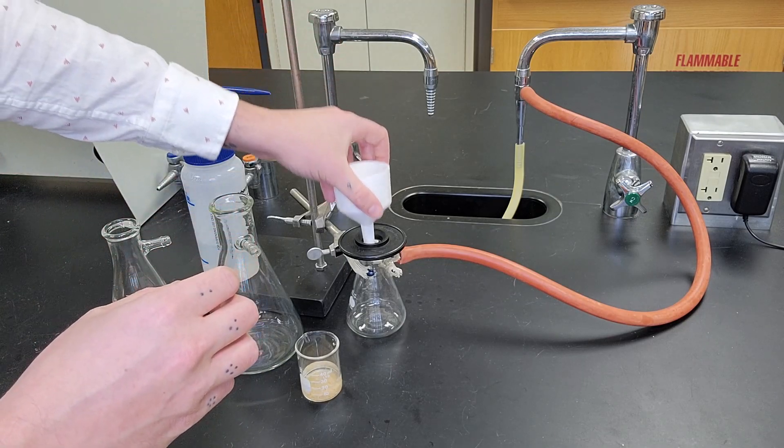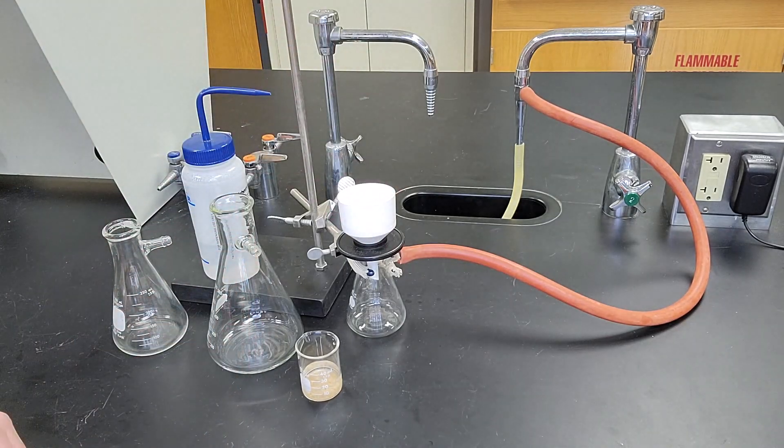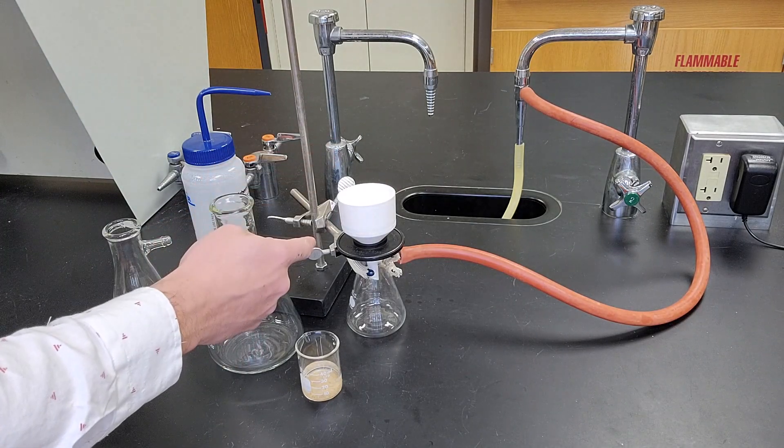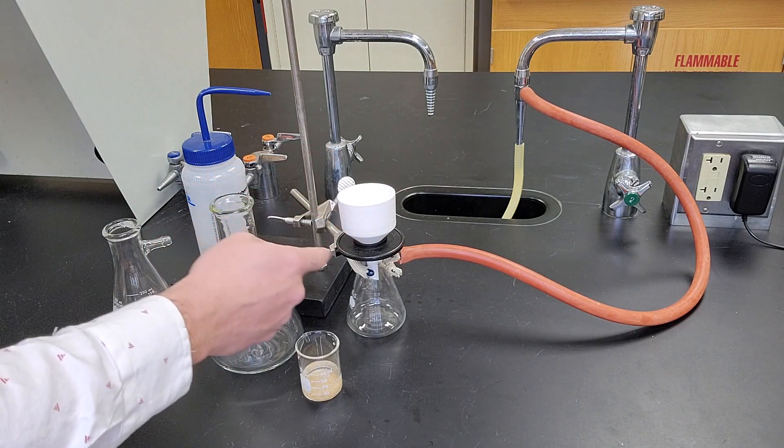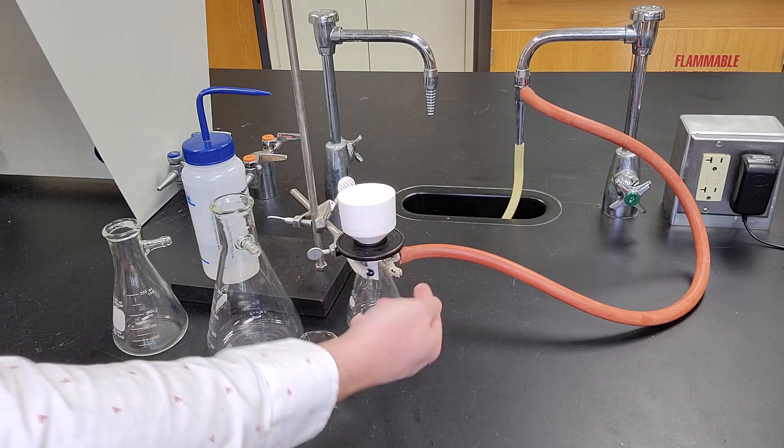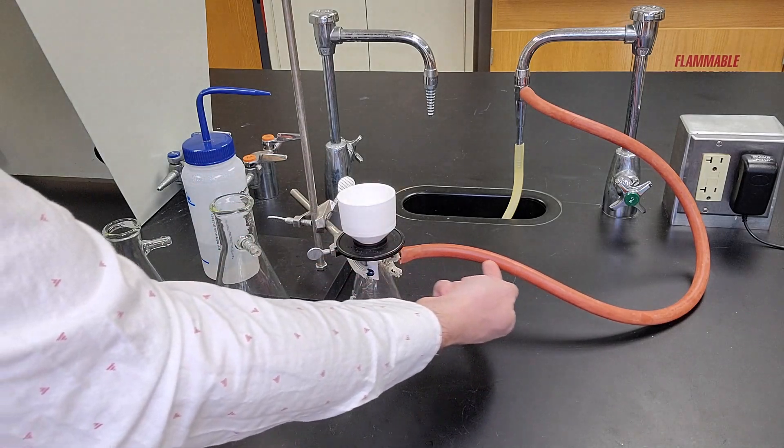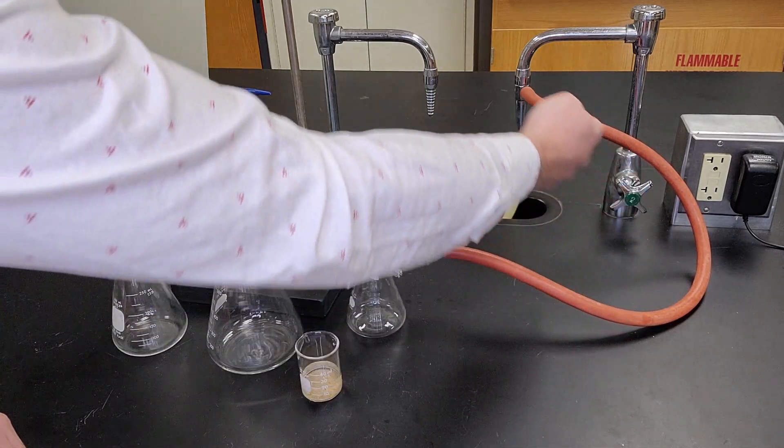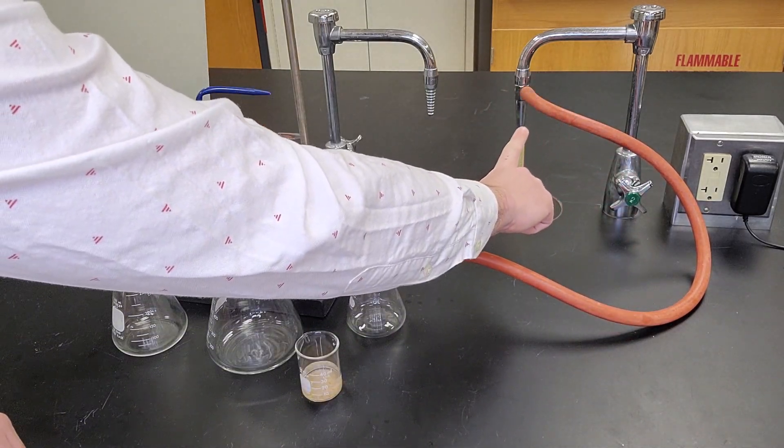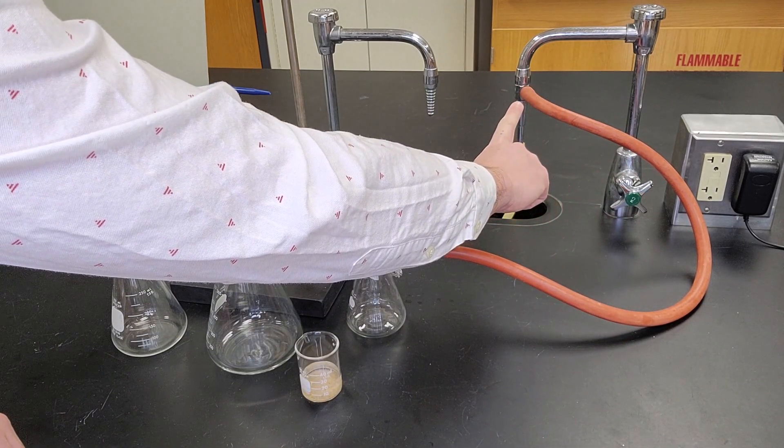This sits on the top like so with the filter paper inside, the rubber ring to create the seal, and the sidearm flask on the bottom. I've already attached the hose that connects to the sidearm on the sink. The sidearm on the sink is what's going to create the vacuum.